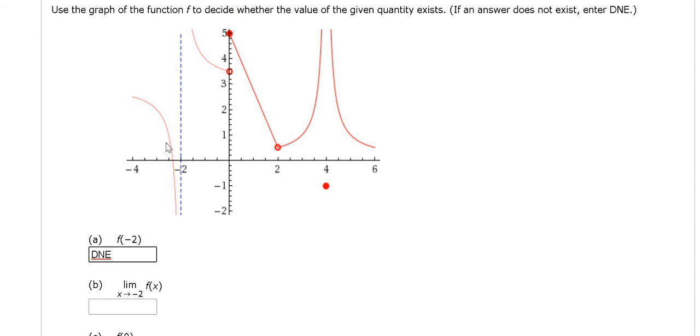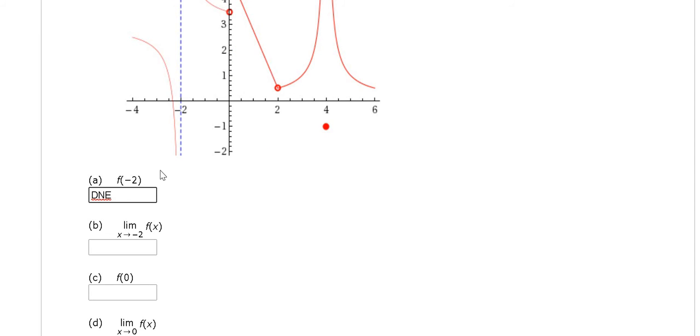If we approach negative 2 from the left, the graph does actually go down forever, so we would get negative infinity. If we approach negative 2 from the right, we would get infinity. These are different answers, so the result is DNE.